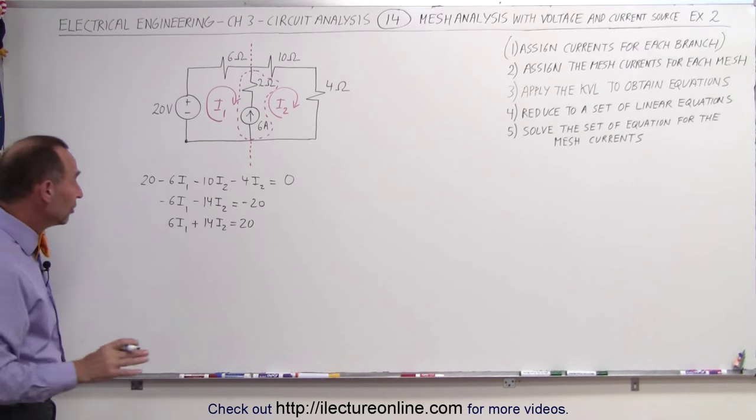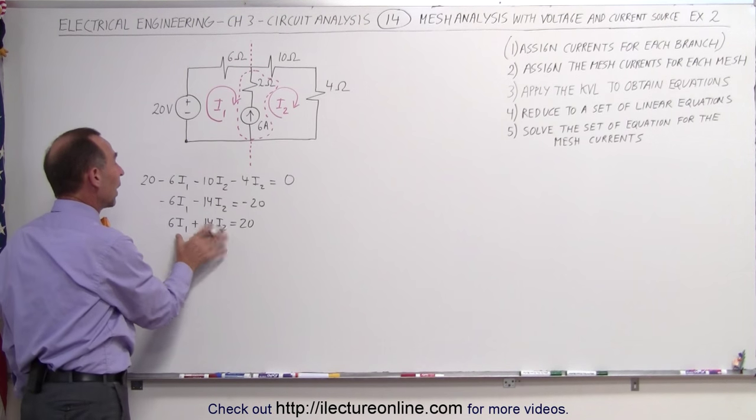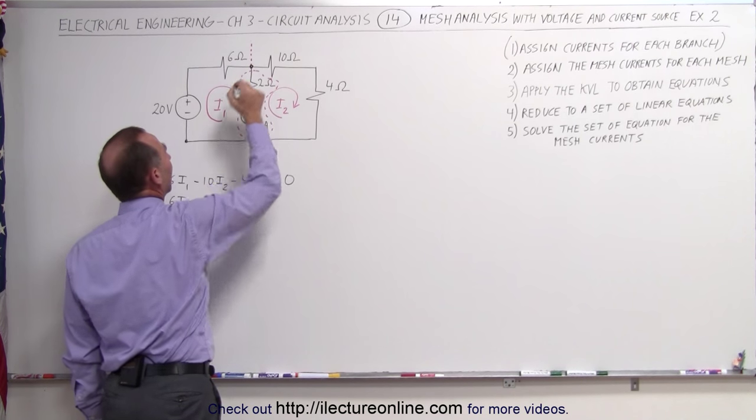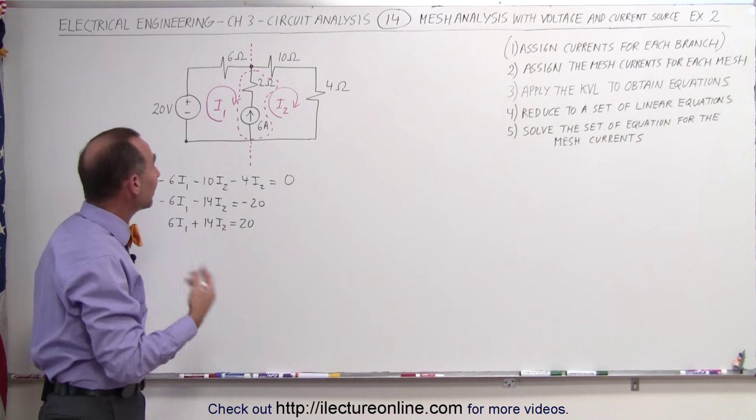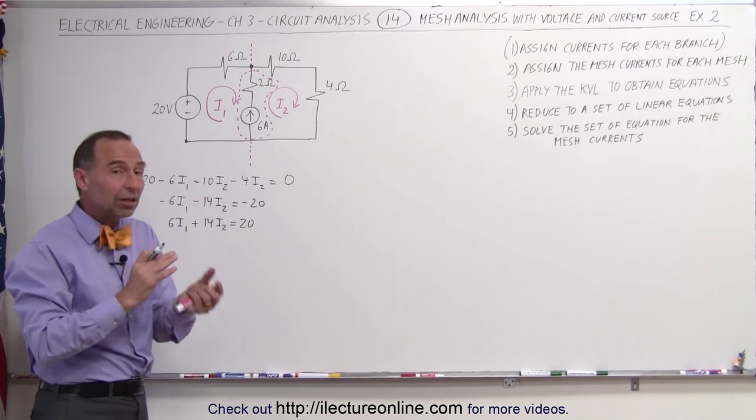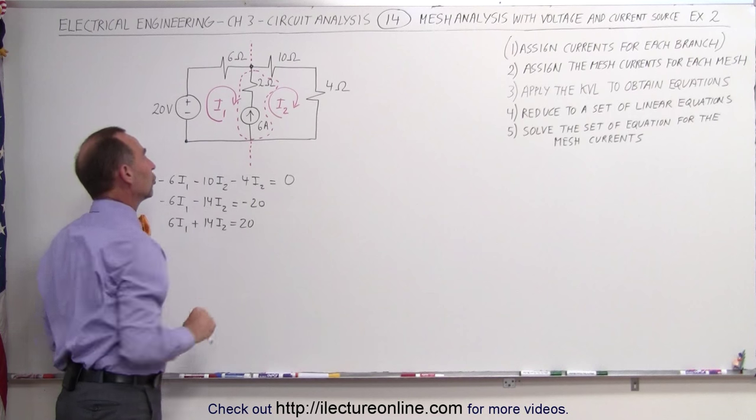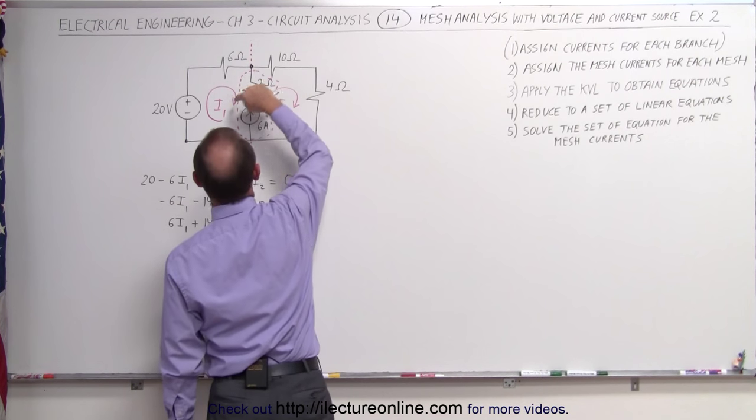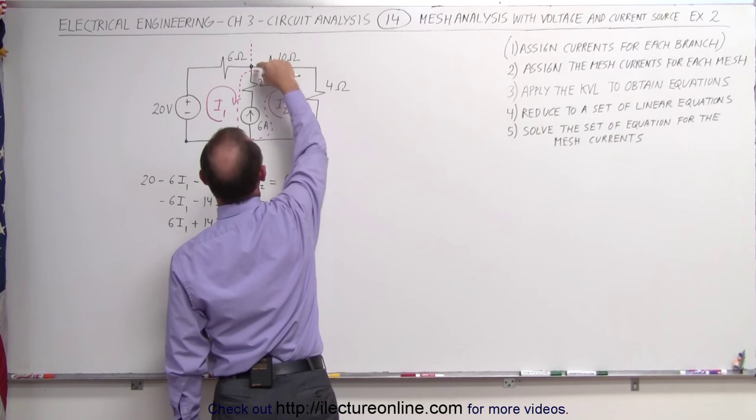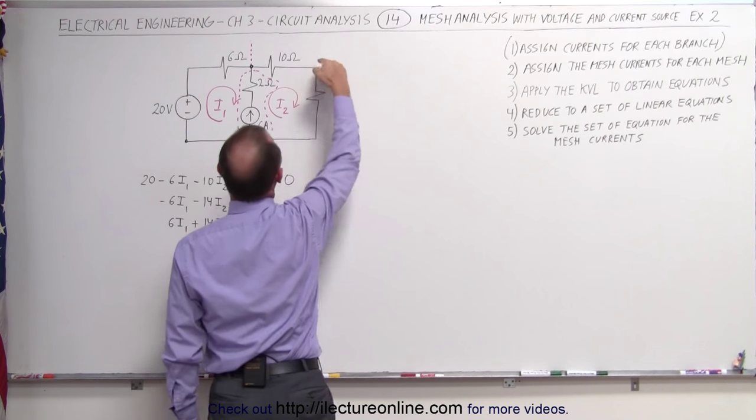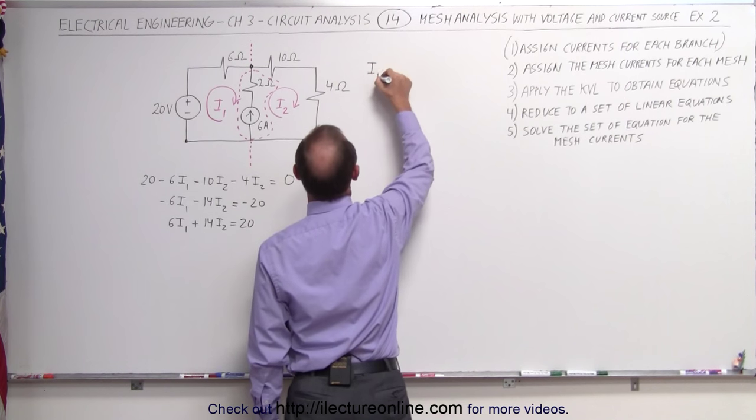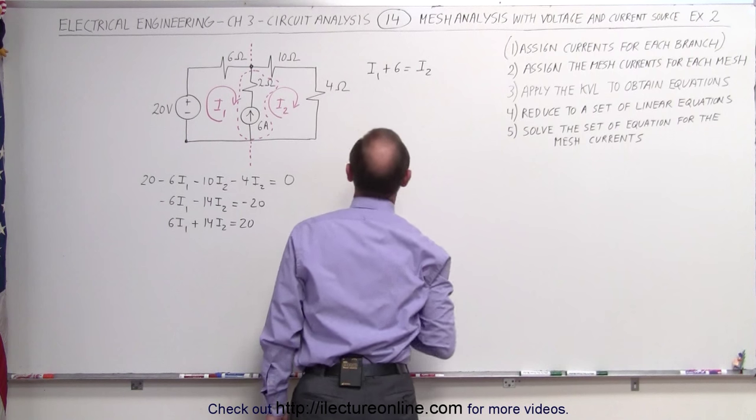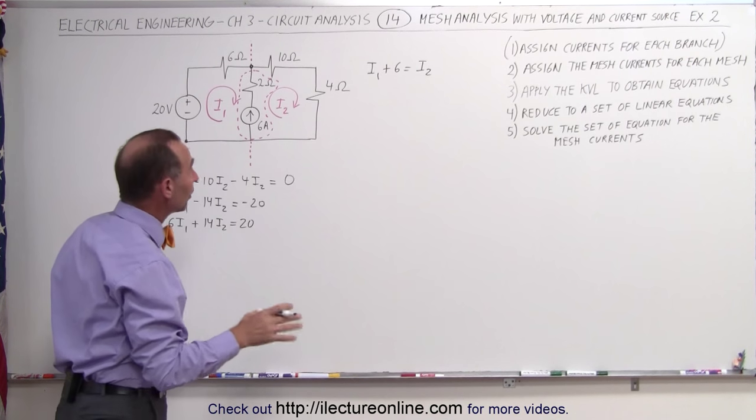Now we only have one equation and two unknowns. However, we have the center branch right here. If I pick this branch point up here, and I add up all the currents that enter the branch point and all the currents that leave the branch point, I can find a relationship between I1, I2, and that current source in the middle branch. Let's do that. At this point we have I1 entering, we have 6 amps entering, and we have I2 leaving, which means that I1 plus 6 equals I2. Therefore, I2 equals I1 plus 6.